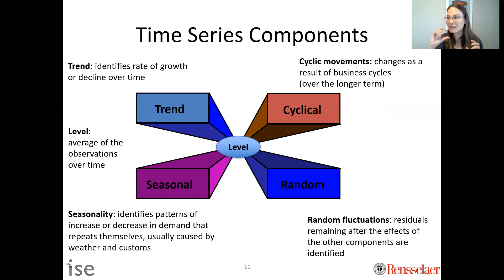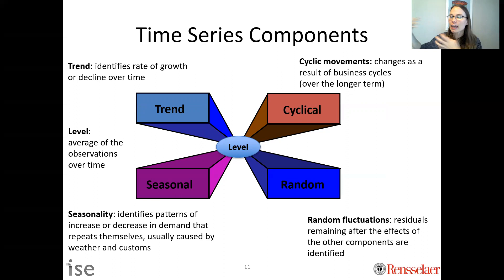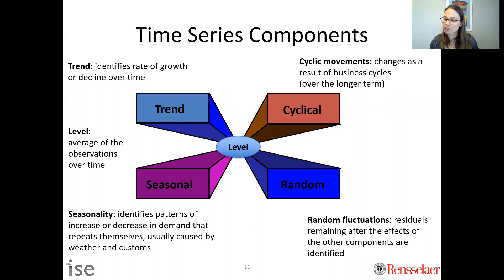Seasonality identifies a pattern that repeats. For example, if Monday is a lower day than Friday, or lunchtime has more customers than 3 p.m. every day — those are examples of seasonality. That is different from cyclical components, which are changes as a result of business cycles over the long term — for example, if your company is in a recession.